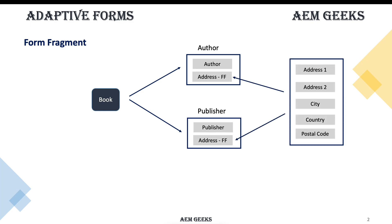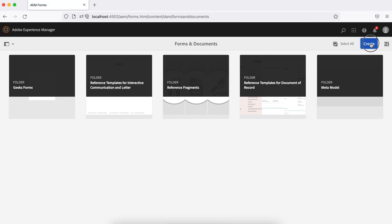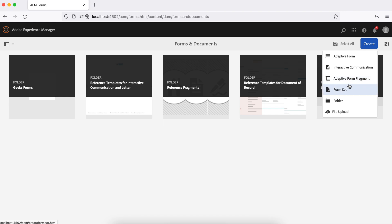We create the address form fields just once and reuse the form fragment across different forms. In the future, if we need the same fields for other forms, we can reuse them using this form fragment. Creating a form fragment is straightforward — go to forms and you will see an option to create an adaptive form fragment.